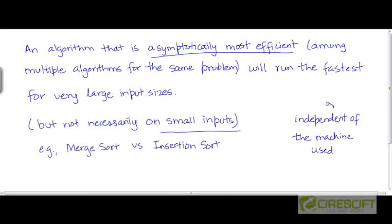Now, independent of the machine used, the following is true. If you have an algorithm for a problem that solves it in, say, theta of n² time, and if you have a bunch of other algorithms which run in time theta of n³, one can say that the algorithm that is asymptotically most efficient will eventually run the fastest as the input size n becomes large.